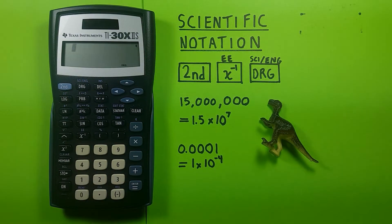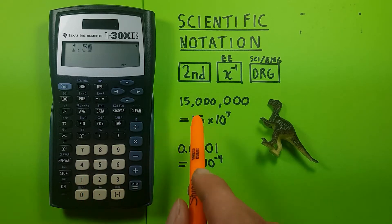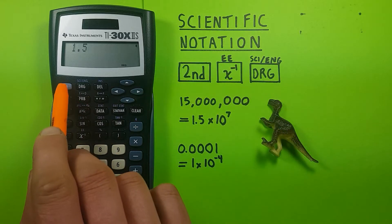Alright, to get started, let's say we're given a number in scientific notation and wish to enter it in our calculator. Let's say 1.5 times 10 to the 7th. Well, to start we enter the 1.5 and then we use the second function of the reciprocal key, this EE value here. So second function, reciprocal, you see the EE up there.